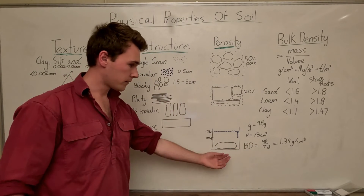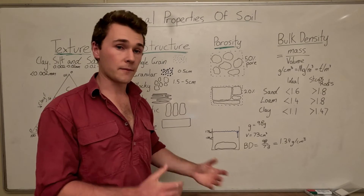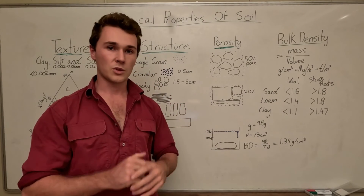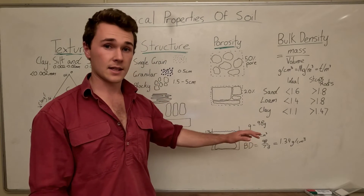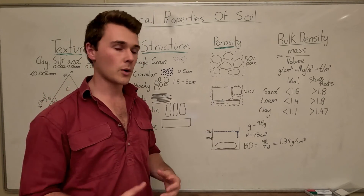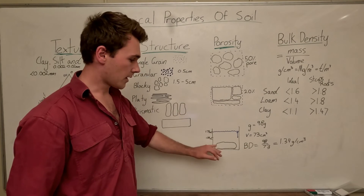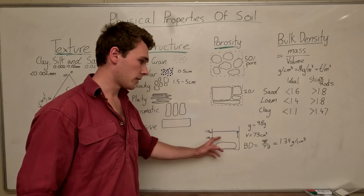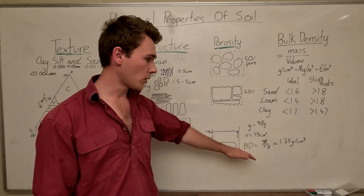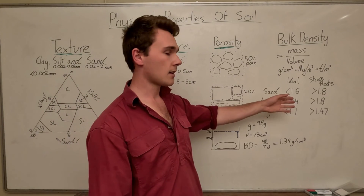For example, the water level was at 100 mL but increased to 173 mL, and the soil weighed about 98 grams. The water level increased by 73 mL, meaning the soil displaced 73 cm³ of water — which equals the volume of the soil. Make sure the soil is sitting on the bottom so it's displacing its full volume. Then divide the weight by the volume to get bulk density: in this example it's 1.34 g/cm³, which for a loamy soil is pretty good.